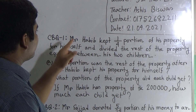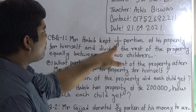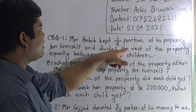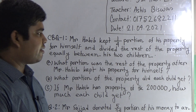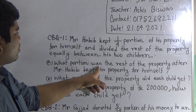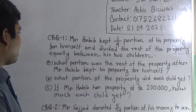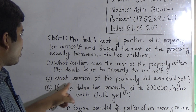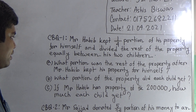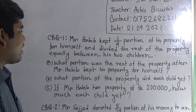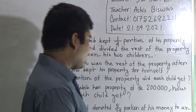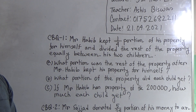I have already written CBQ1 and CBQ2 both on the board. First we solve CBQ1 as your CW. Please notice the board. Mr. Habib kept one by four portion of his property for himself and divided the rest of the property equally between his two children. Question A: what portion was the rest of the property after Mr. Habib kept his portion for himself? Question B: what portion of the property did each child get?